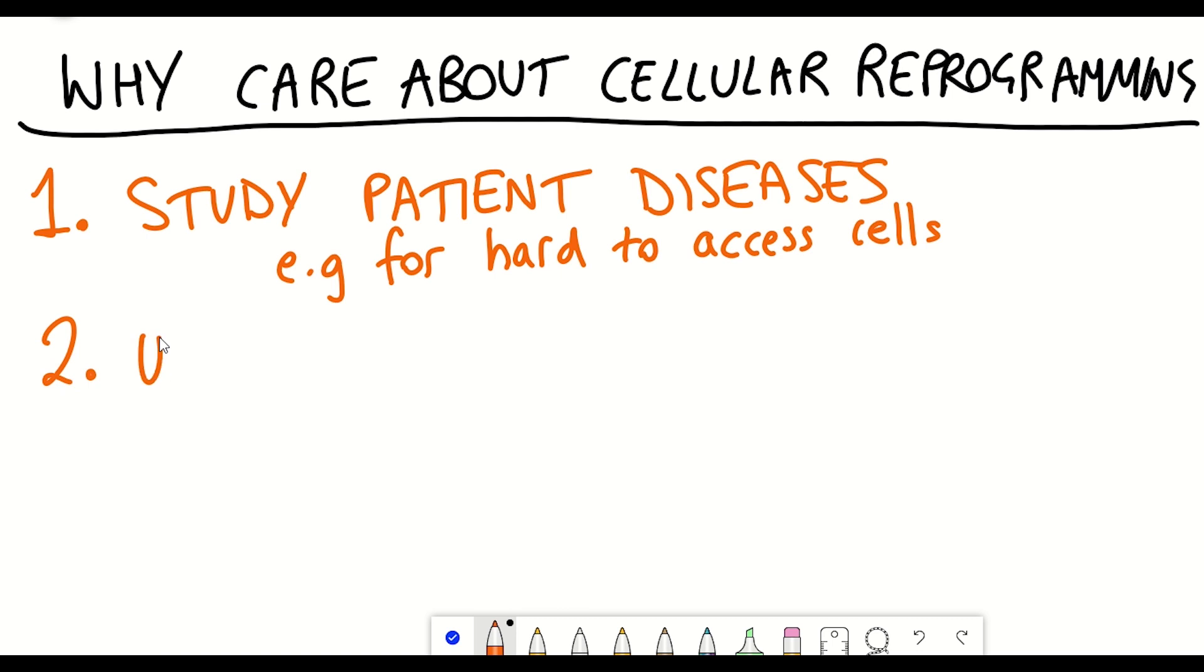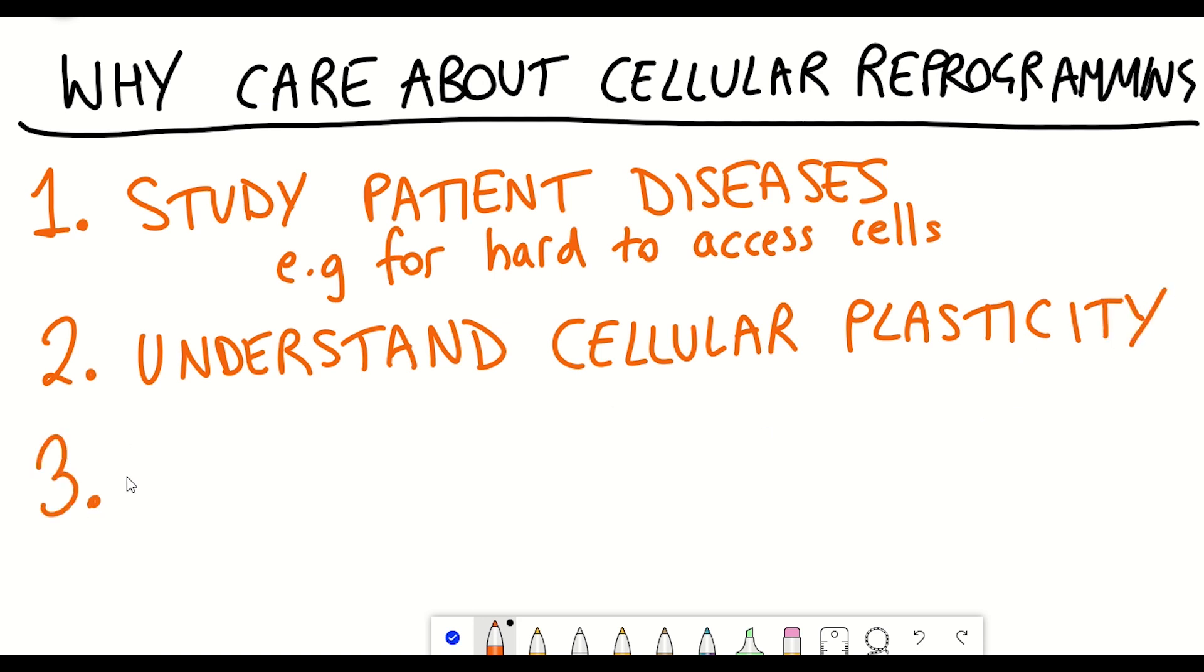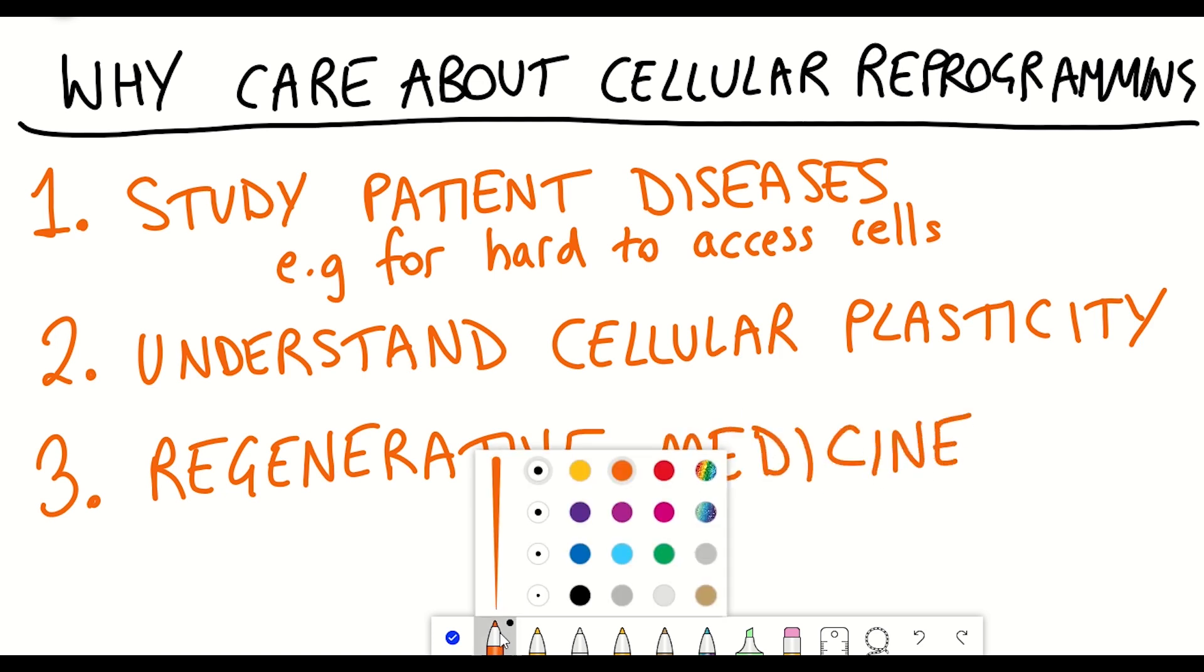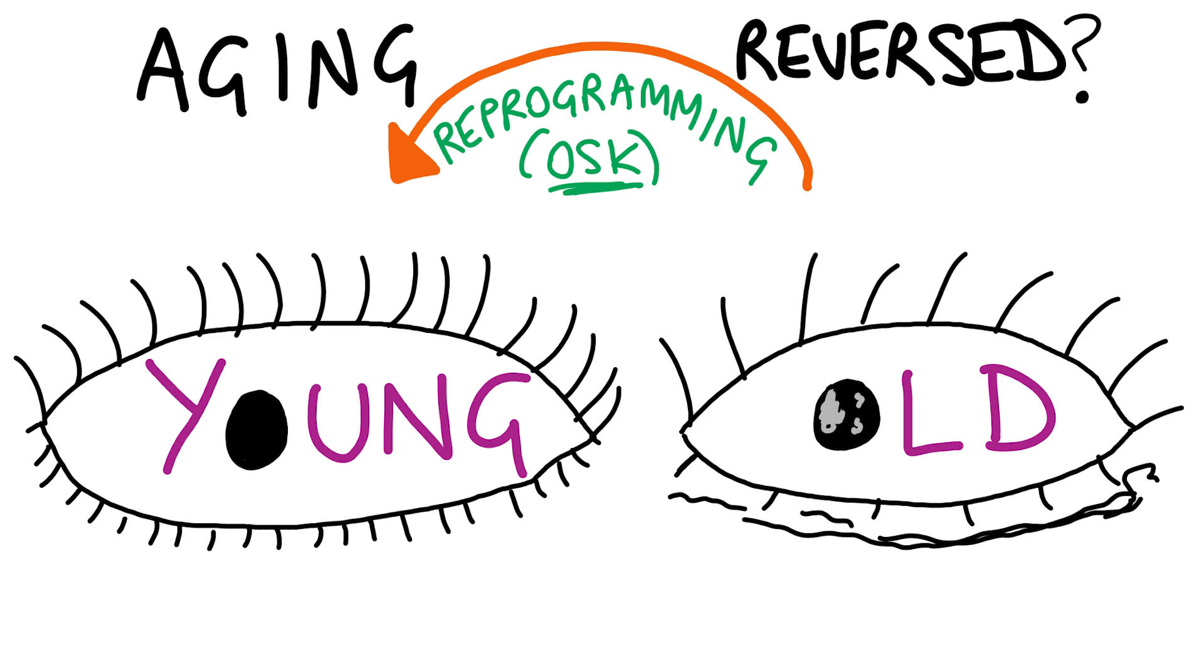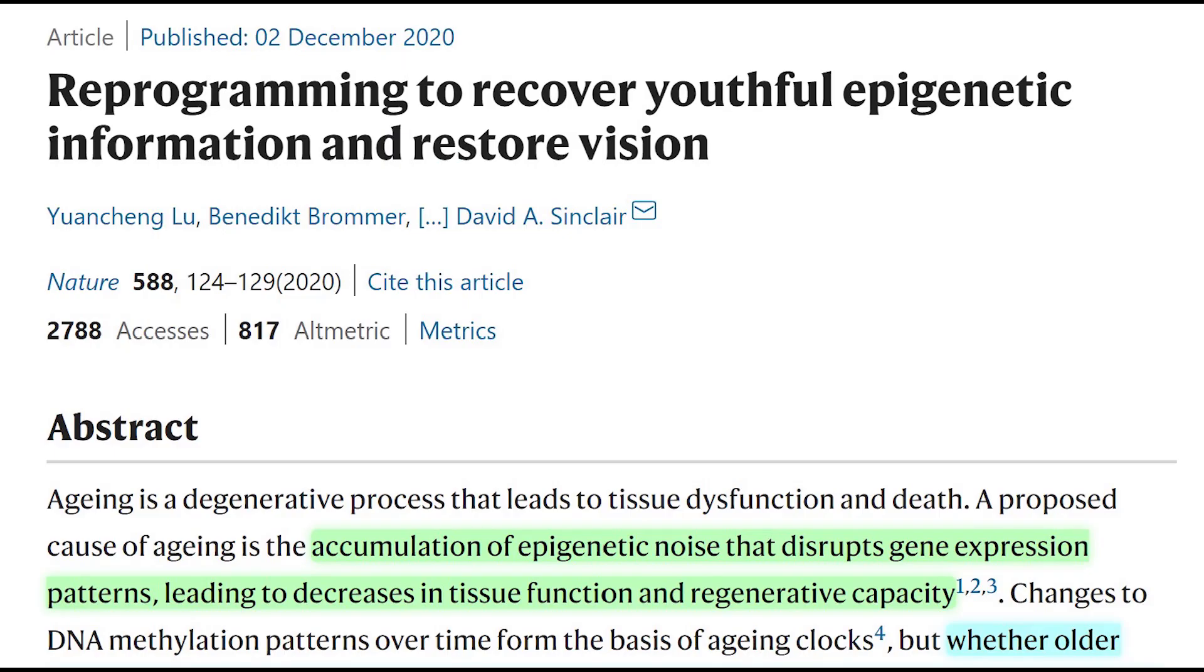Secondly, it's just useful to understand cellular plasticity and understand what makes a cell type a cell type. And then lastly of interest are regenerative medicine approaches, whereby cellular reprogramming could either be used for cellular replacements or by in vivo reprogramming. And I spoke about an in vivo reprogramming technique that was used in mice at the end of last year by the David Sinclair lab, whereby they were able to restore vision in old mice.